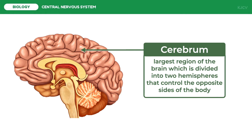The corpus callosum is the body's information superhighway — the two hemispheres communicate and cooperate with each other through constant information exchange via this neural connection. Thinking takes place in the cerebrum, which is the largest part of the brain. This is also where impulses from the senses are interpreted, memory is stored, and movements are controlled.